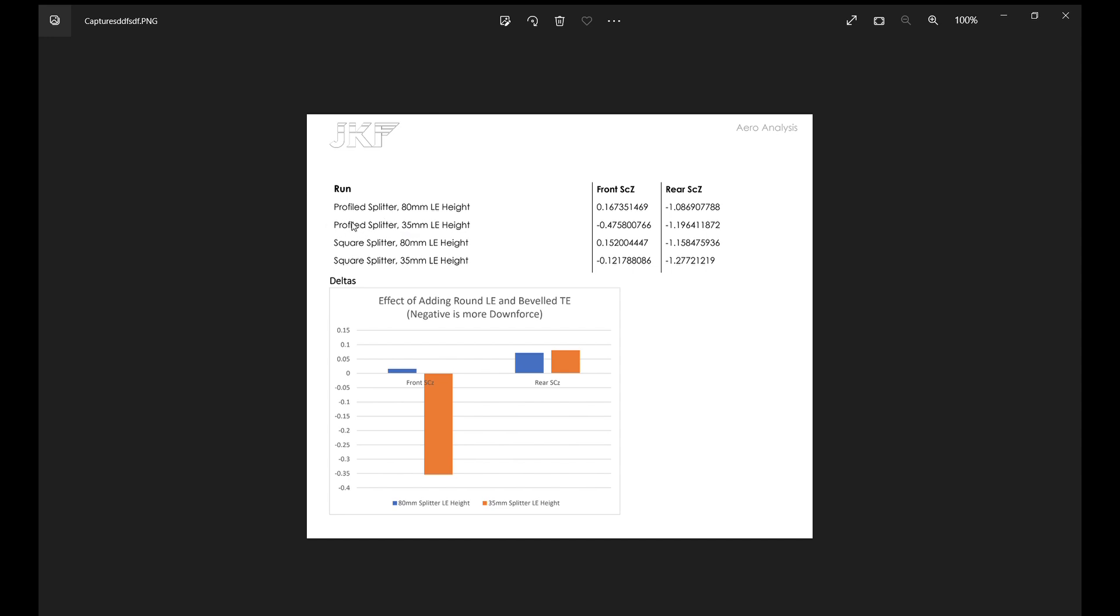The lower ride height, the profiled splitter versus the square splitter is where the big difference was. So the square splitter at the low ride height had a coefficient of negative 0.12 while our profiled splitter had a negative coefficient of 0.47, which is almost four times the amount of downforce from our splitter versus a non-profiled splitter. So even though our profiled splitter at 80 millimeters performed a tiny bit worse, you got to imagine once you get up to speed and a little bit of aero load on the car at 75 millimeters, our splitter and front end setup starts overtaking the square edge and that performance increases exponentially as it gets a little closer to the ground.